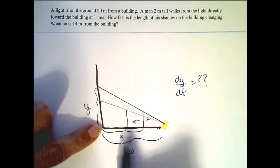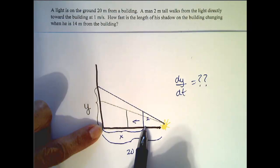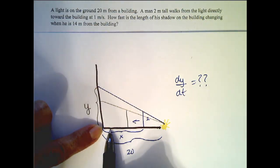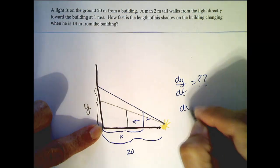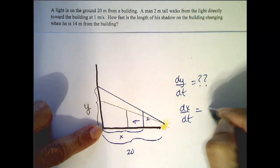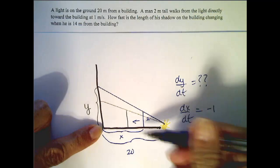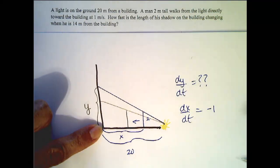Now what are we given? We're given that this distance right here, from the man to the wall, which we called X, is changing at a rate of 1 meter per second. dx/dt equals, and I'm gonna write negative 1, because this distance is getting smaller.